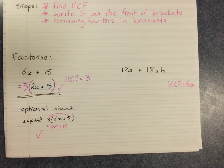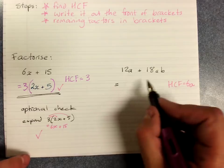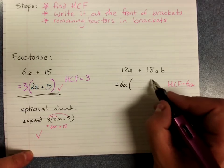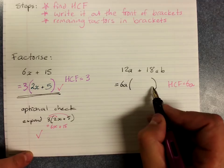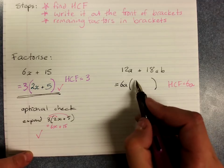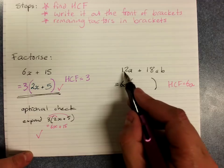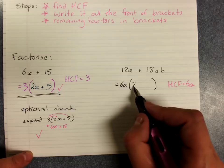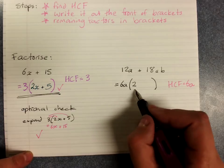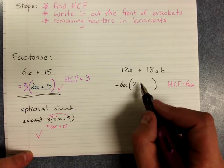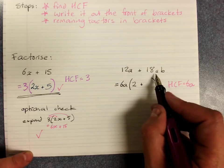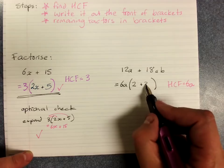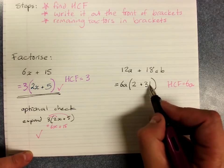So when we're asked to factorize, we put our highest common factor out the front of the brackets. And the terms that go inside are whatever we have to multiply it by to get that. So they're the leftover factors. Because 6a times 2 would give me 12a. It's a pair of factors. Plus 6a times 3 is 18. And we've got to get that b in as well.